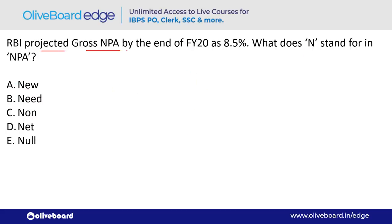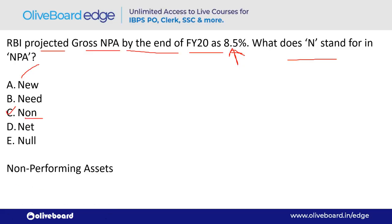RBI projected Gross NPA at 8.5% by the end of the financial year. What does 'N' stand for in NPA? N stands for Non-Performing — NPA is Non-Performing Assets, a very important banking term.